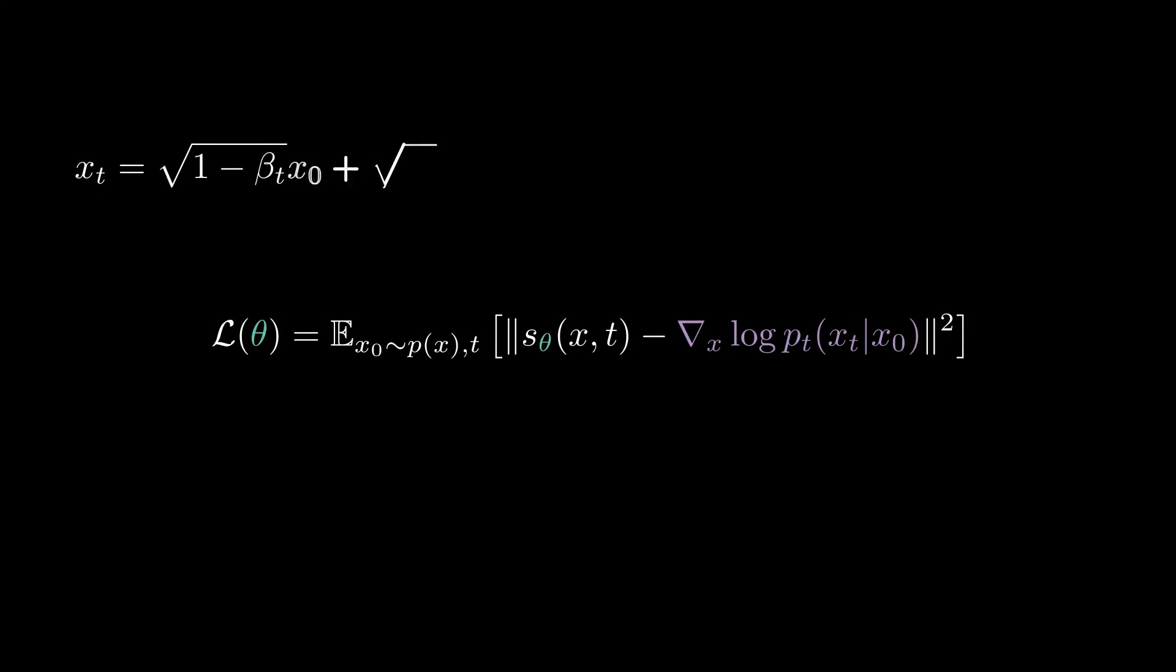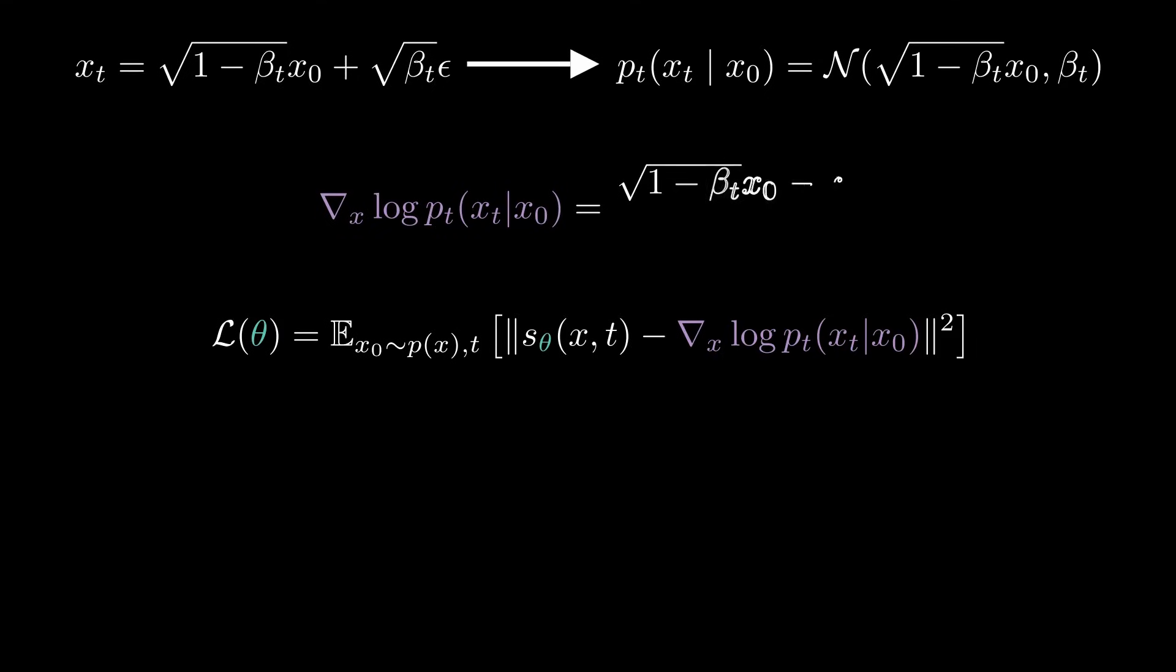Well, for the SDE associated to DDPM, we know that this conditional distribution is actually a Gaussian, so computing its score is very easy. We just have to compute the derivative of a Gaussian. So let's write this score explicitly. We end up with this simple expression which only requires knowing x_0, the ground truth, and x_t, the noisy sample. And because x_t is constructed from x_0 and the Gaussian noise epsilon, we can write the conditional score depending only on epsilon. And that's it.